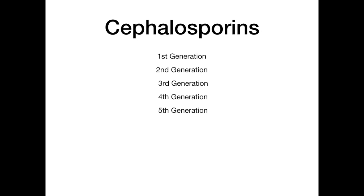Cephalosporins are a huge pain to learn. If you've ever looked through a textbook or question bank, you know they're divided into five different generations: first, second, third, fourth, and fifth. It's really high yield to know which specific cephalosporin falls into each category, because they're used for different indications — some can cross the blood-brain barrier, some can treat pseudomonas, some are used for respiratory infections, and others for urinary tract infections.